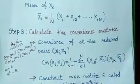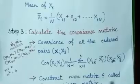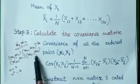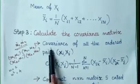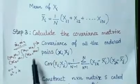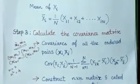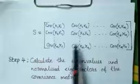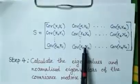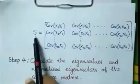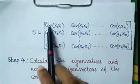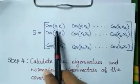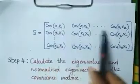For all ordered pairs we find the covariance, and arrange them into an n-by-n matrix called the covariance matrix. Here S is the covariance matrix, and each matrix element is the covariance of the corresponding ordered pair of features.